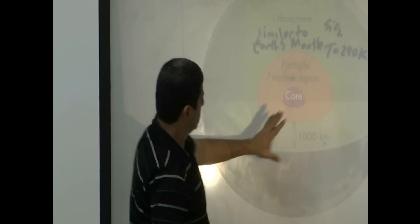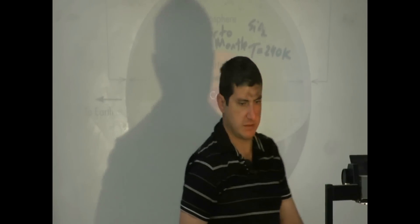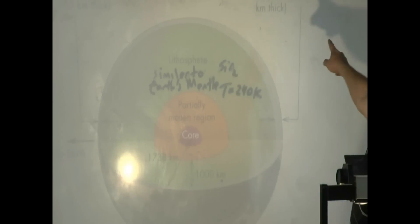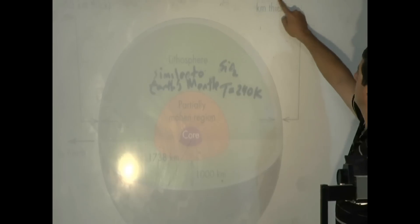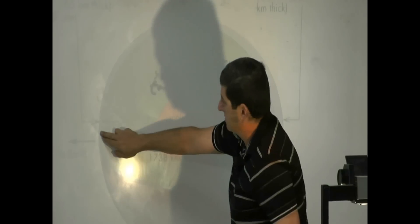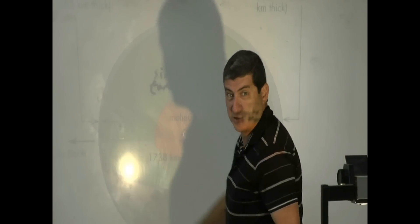You see here? The opposite side is thicker. So that's called the far side of the moon, thicker crust. Near side thinner. Interesting, huh?